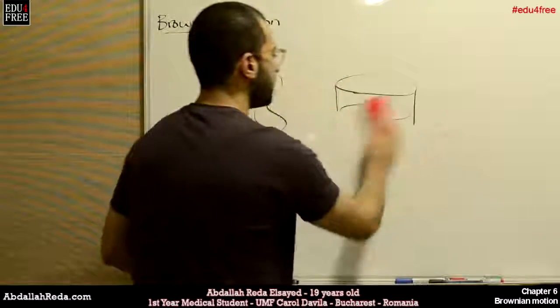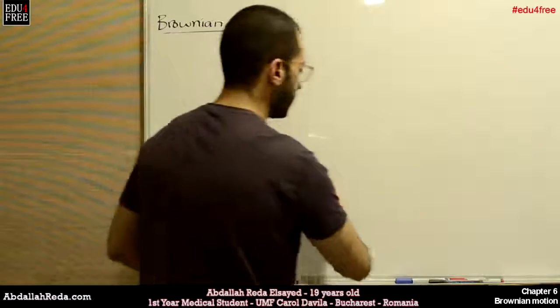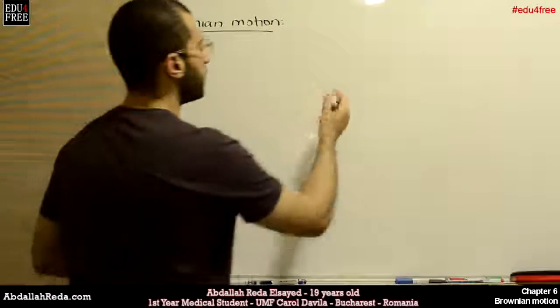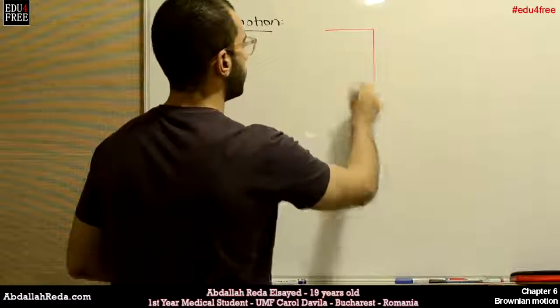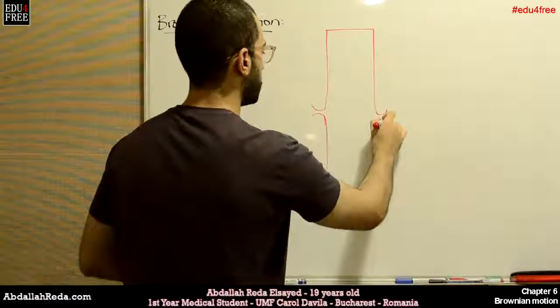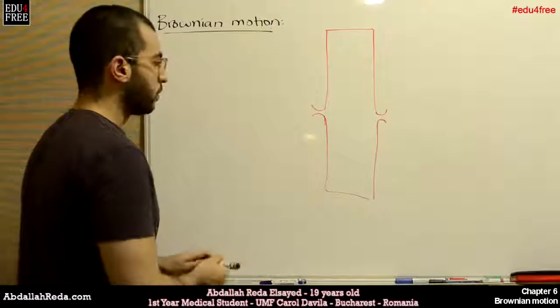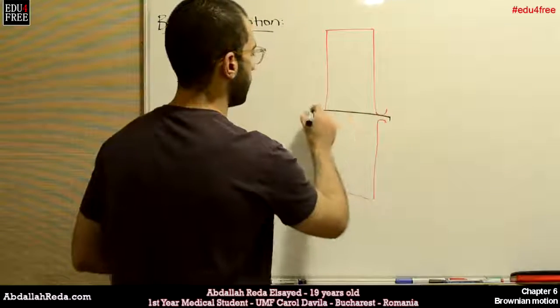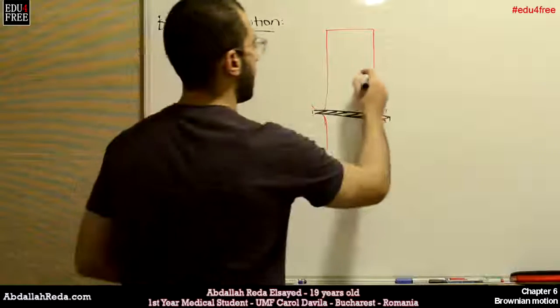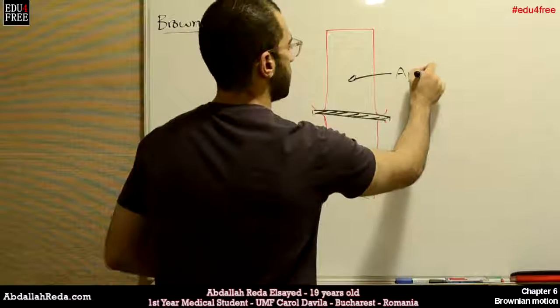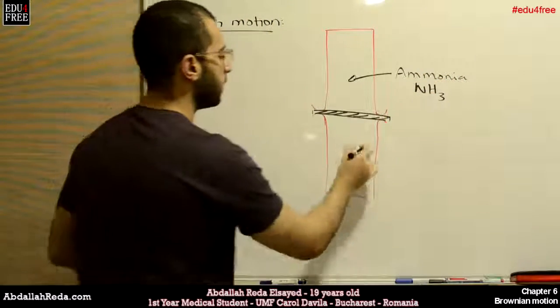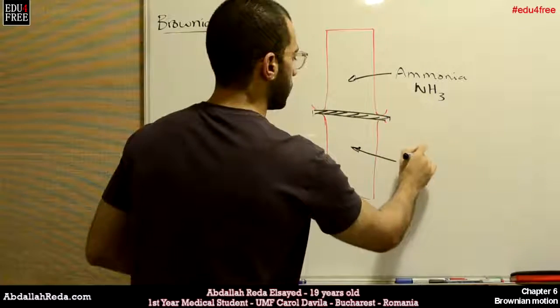For the third postulate, which says that there are intermolecular spaces between the gas molecules, this one is interesting. So we can put two test tubes like that, one inverted and one that stays normally. And we will separate between both of them with a cardboard or a piece of paper. And the upper tube will have ammonia gas, NH3, and the one below will have hydrogen chloride gas.